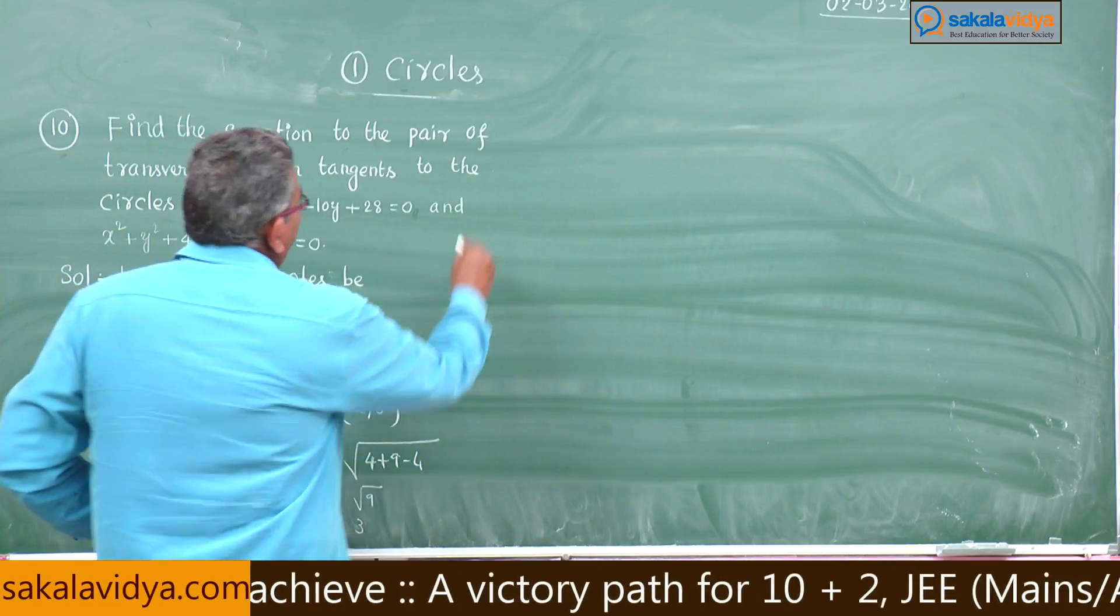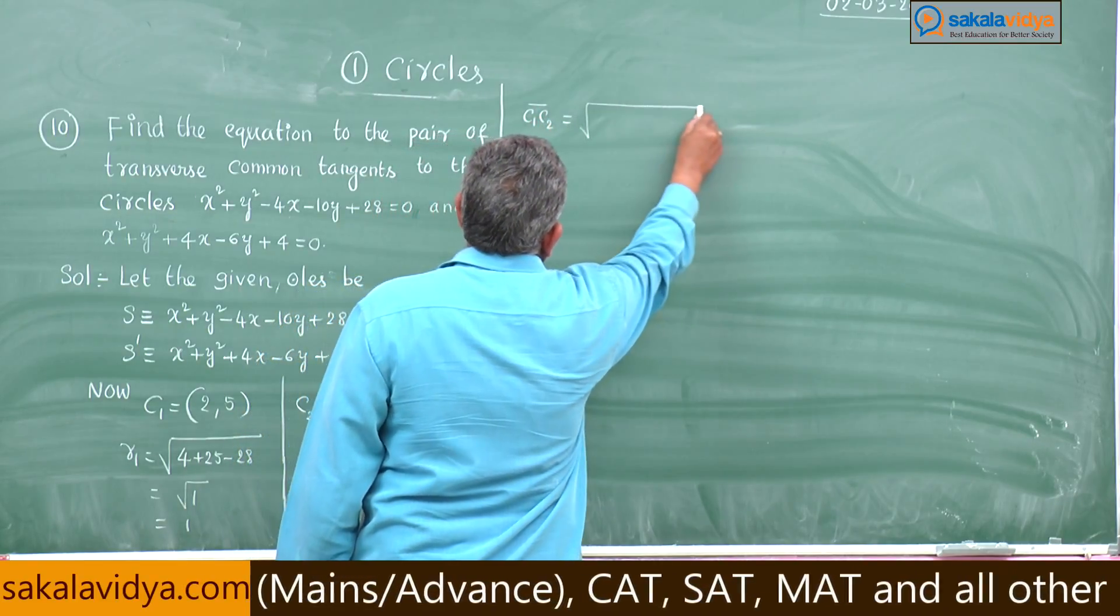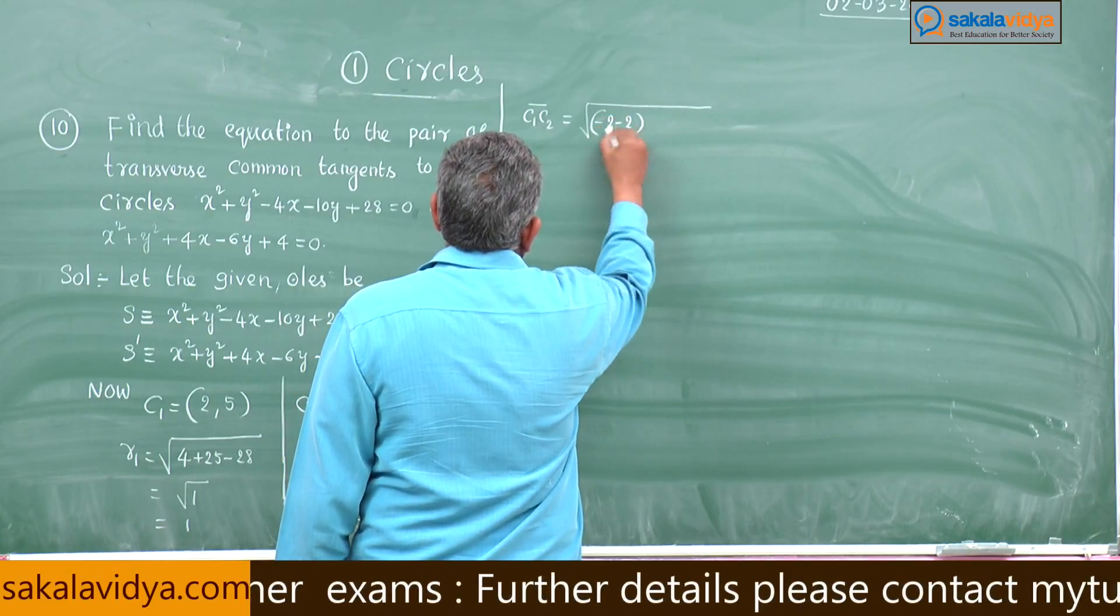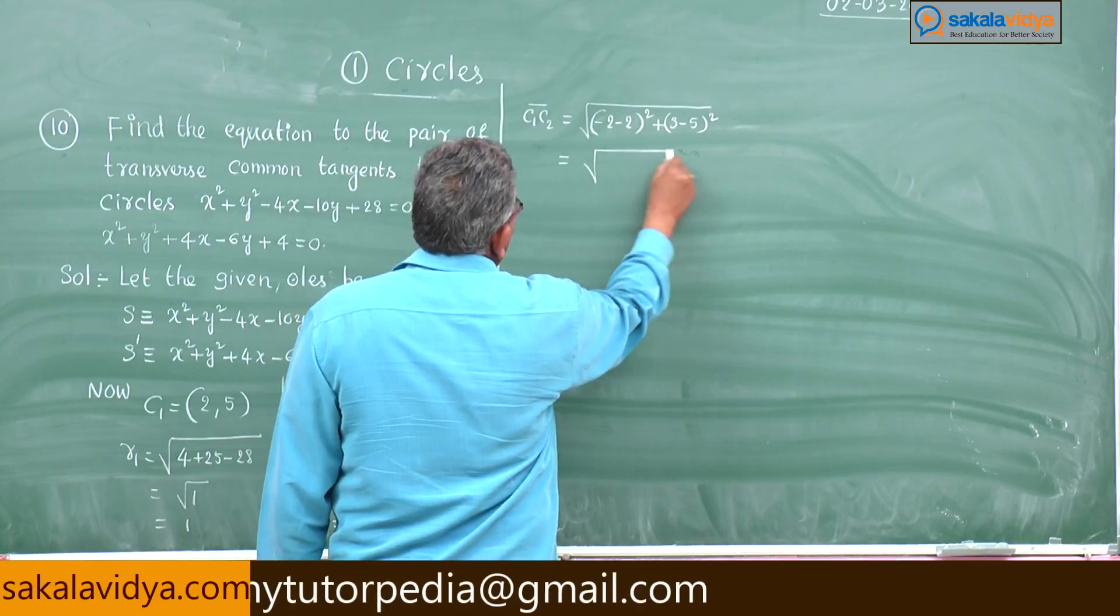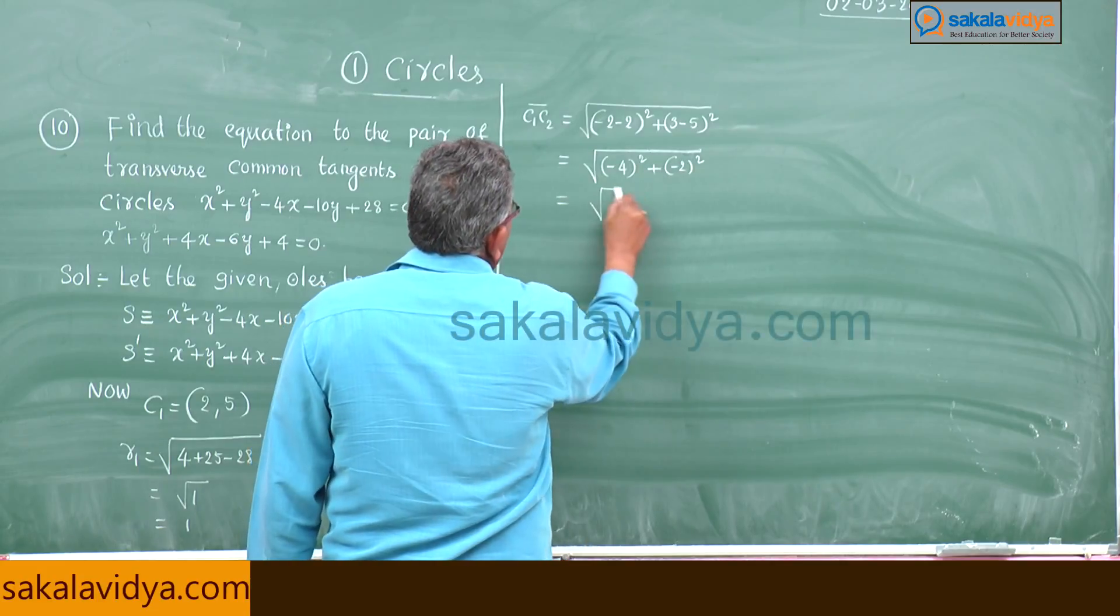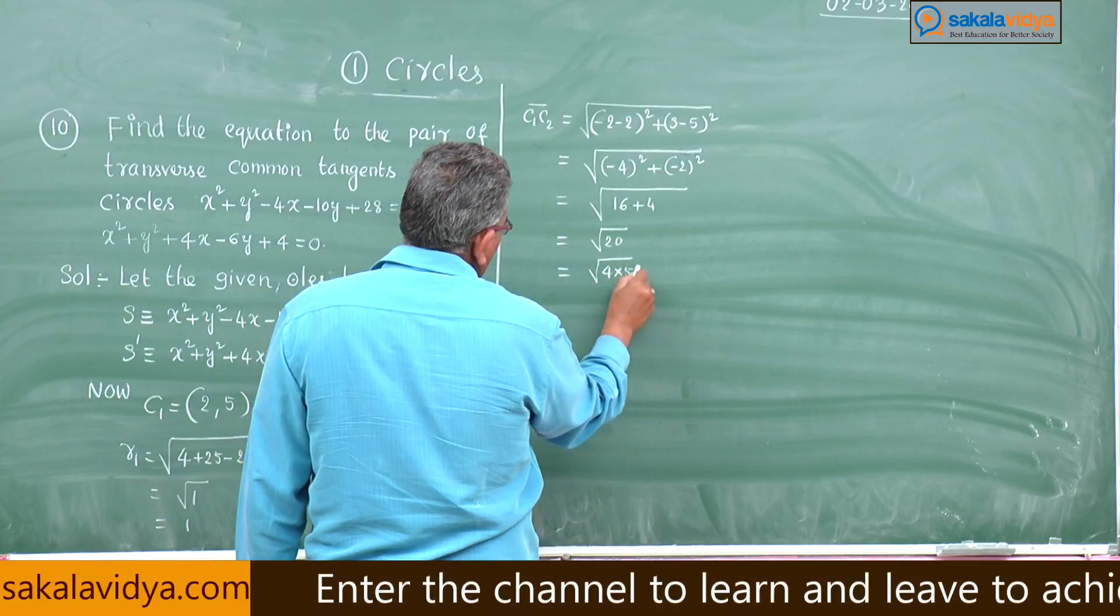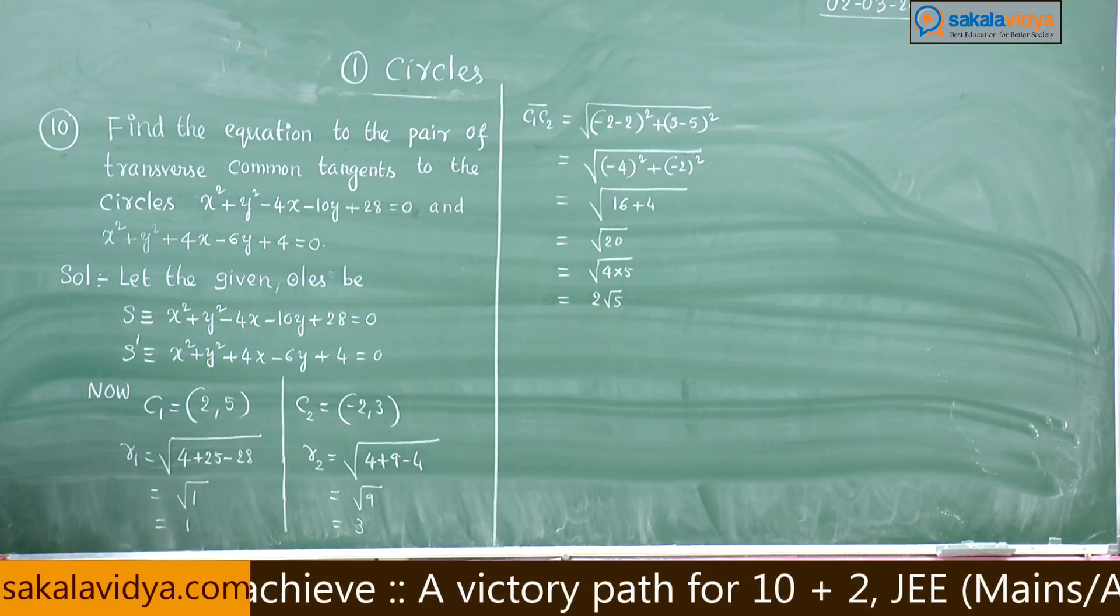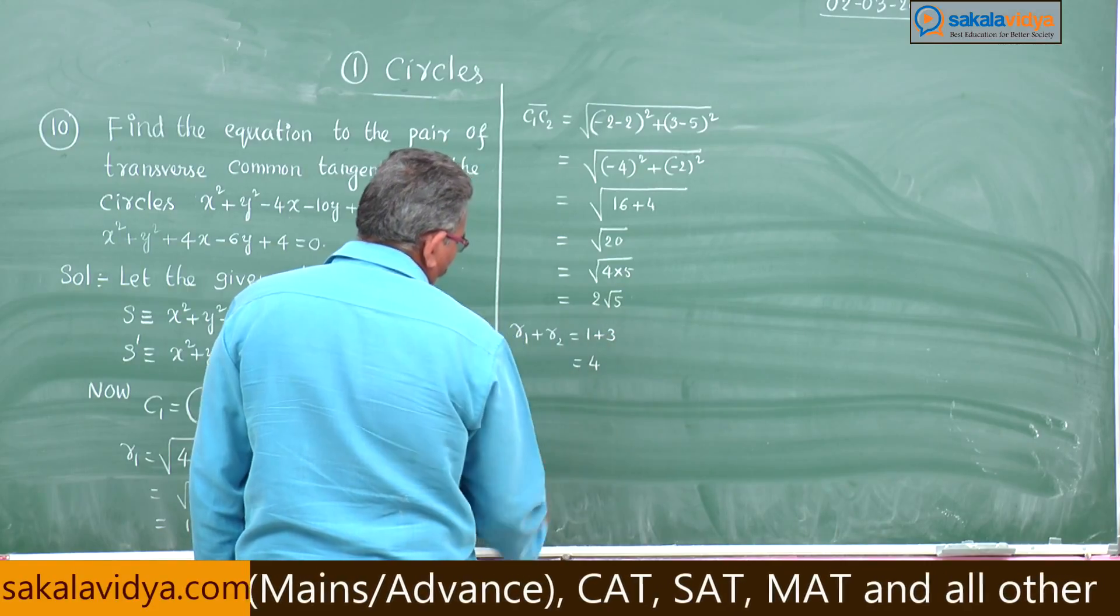Now we know R₁ and R₂. Here, let us find out the distance between the centers C₁C₂. Using distance formula: √[(-2 - 2)² + (3 - 5)²]. This is (-4)², which is 16 + 4 = √20, that is √(4 × 5) = 2√5. R₁ + R₂ = 1 + 3 = 4, which will be less than 2√5.